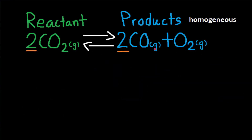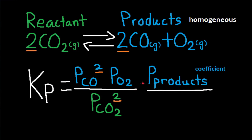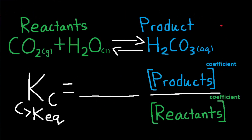Because everything is a gas, this reaction could also be written as Kp. Kp is written basically the same as Kc or Kaq, but instead of concentration, P is used. P stands for partial pressure, so Kp is equal to the partial pressure of products divided by partial pressure of reactants, and coefficients still become exponents.